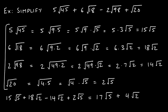Simplifying 5 times radical 45: we look for the largest perfect square less than 45 that is a factor. 36 is not a factor, 25 is not a factor, 16 is not a factor, but 9 is. So 45 equals 9 times 5. Using the product rule, square root of 9 times 5 splits into square root of 9 times square root of 5. Square root of 9 is 3, and 5 times 3 is 15, so 5 radical 45 simplifies to 15 radical 5.